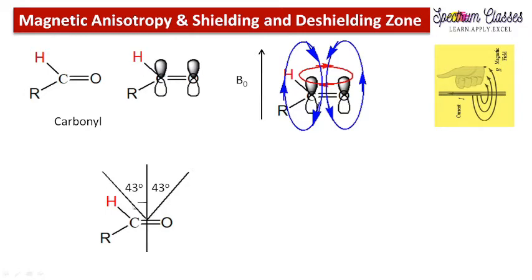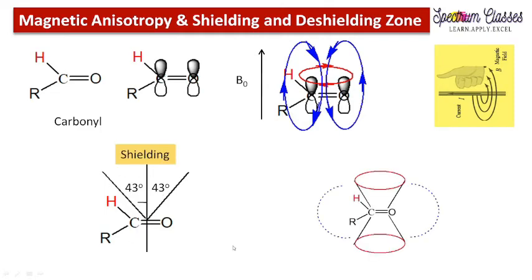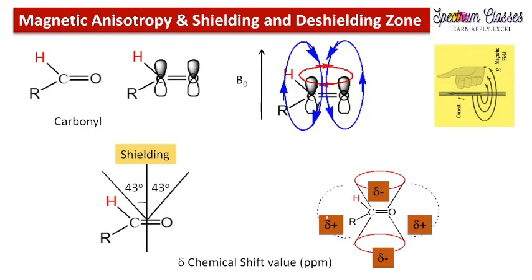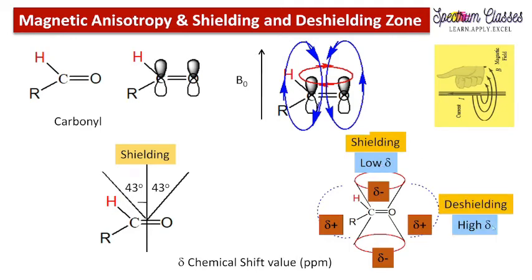This can also be understood by the cone representation. The cone is formed at an angle of 43 degrees — this value is given in William Camp's book. The shielding zone is inside the cone and outside this cone we have the deshielding zone. Delta (δ) is the chemical shift value in ppm: a low delta value represents the shielding zone, and a high delta value represents the deshielding zone.